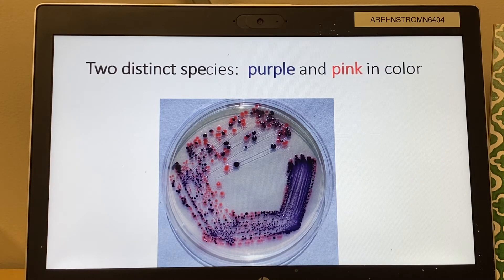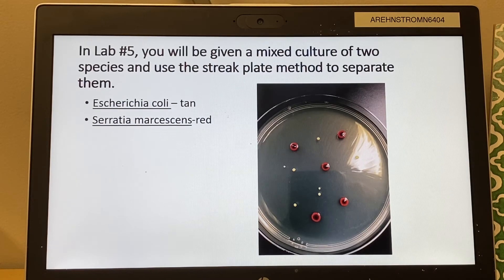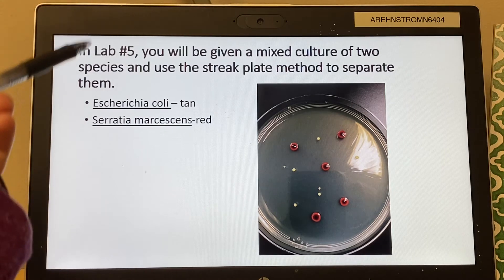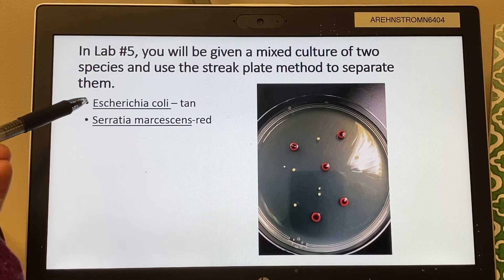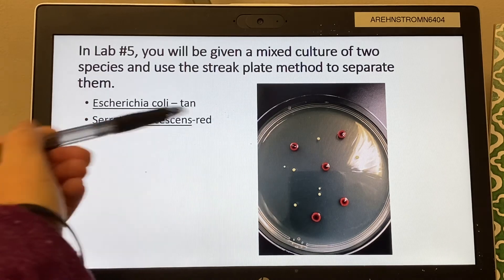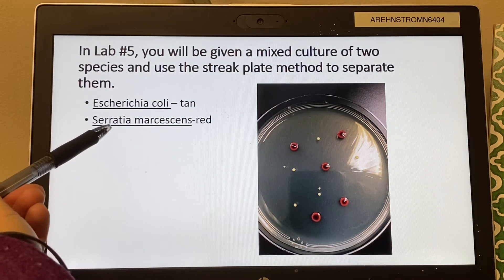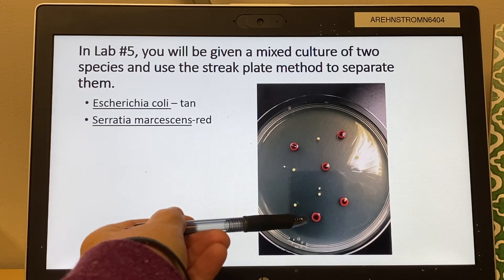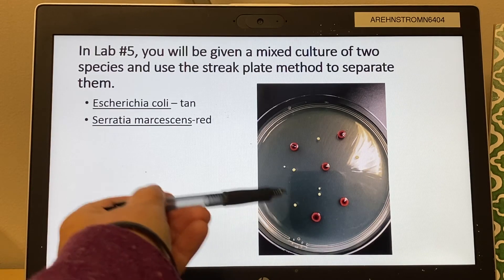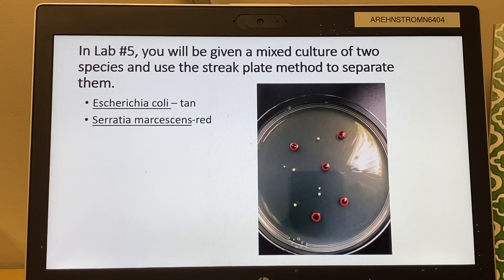In lab five I'm going to give you a mixed culture in liquid form, and you're going to use this method to separate two species. I'll tell you right up front what the species are: it's a mixture of E. coli, which grows tan on agar, and Serratia marcescens, which produces a red pigment and looks red to the naked eye. We use these two simply because they're different colors so you can see the differences with your eye.